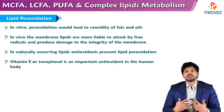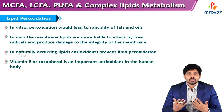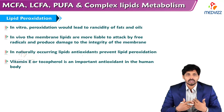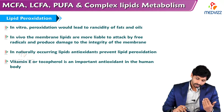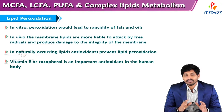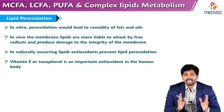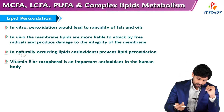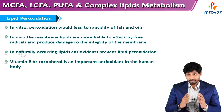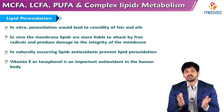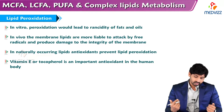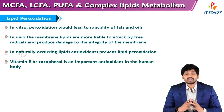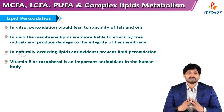Continuing from our previous video on medium-chain fatty acids, long-chain fatty acids, polyunsaturated fatty acids, and complex lipids — how they undergo degradation and metabolism. In vitro peroxidation leads to rancidity of fats and oils. In vivo, membrane lipids are more liable to attack by free radicals, producing damage to the integrity of the membrane. In naturally occurring lipids, antioxidants prevent lipid peroxidation. Vitamin E (tocopherol) is an important antioxidant in the human body, preventing lipid peroxidation of fatty acids present in cell membranes of every organ.